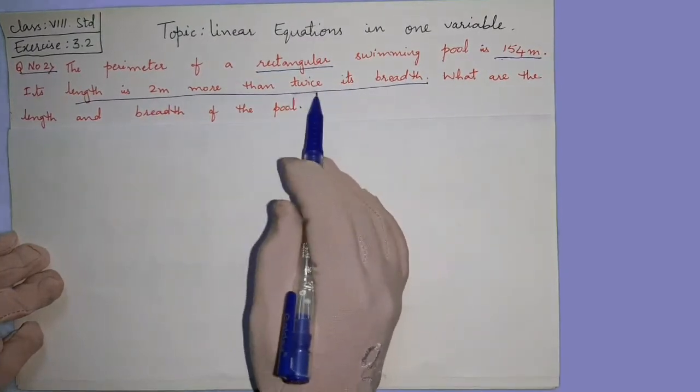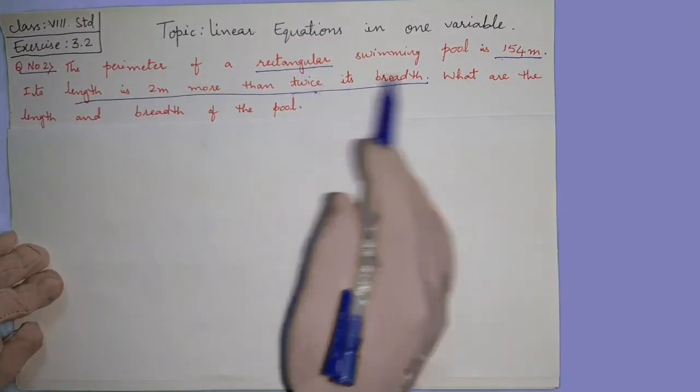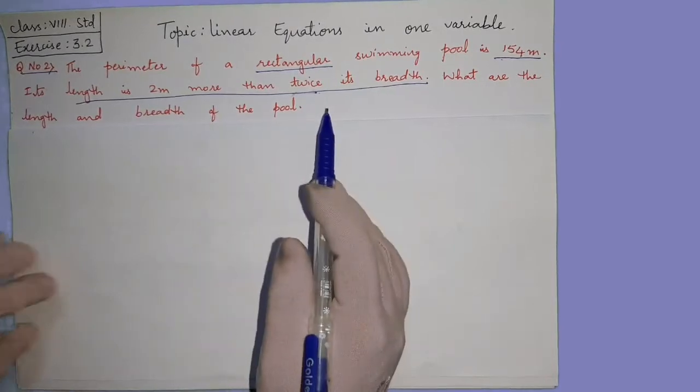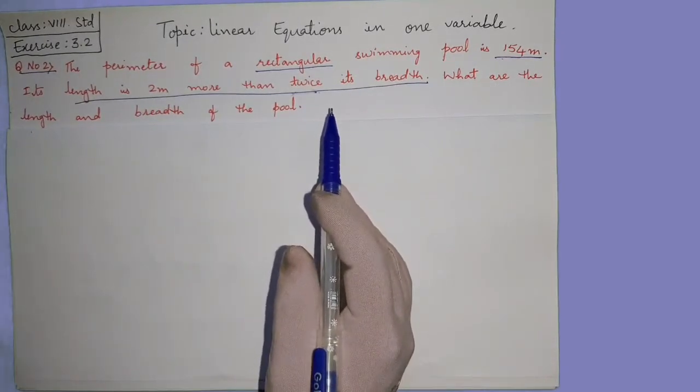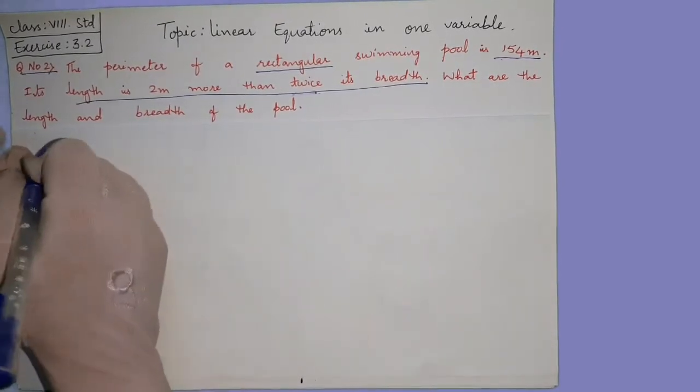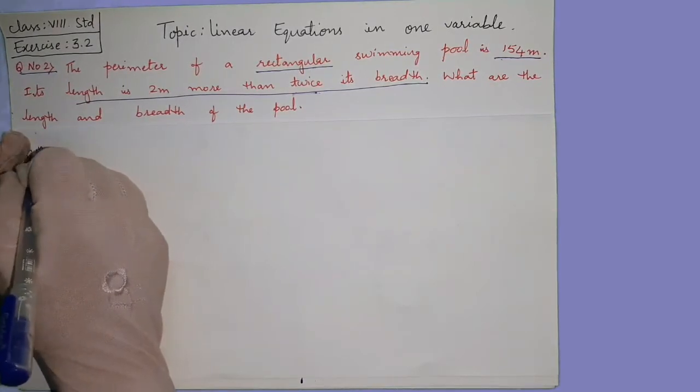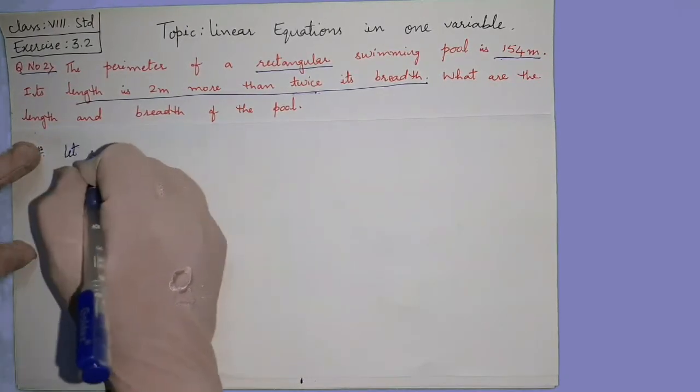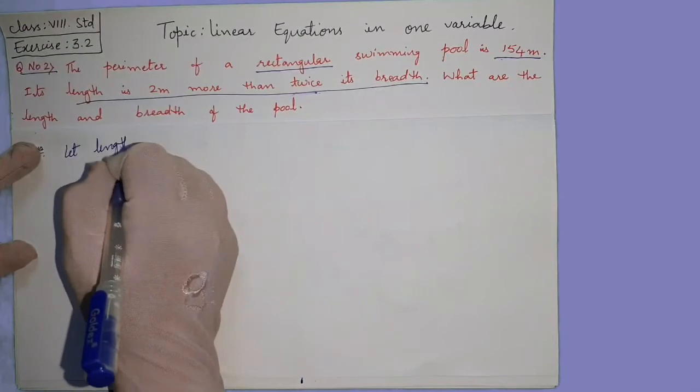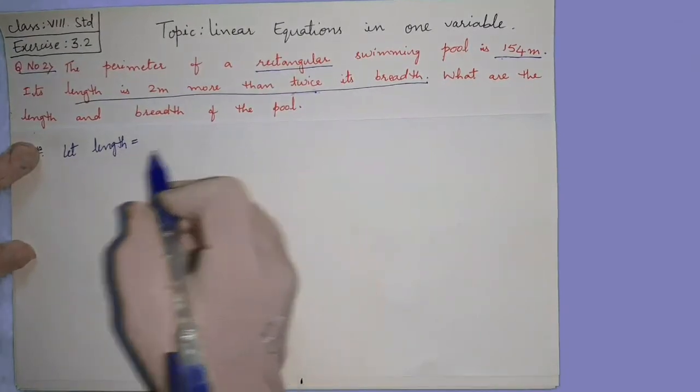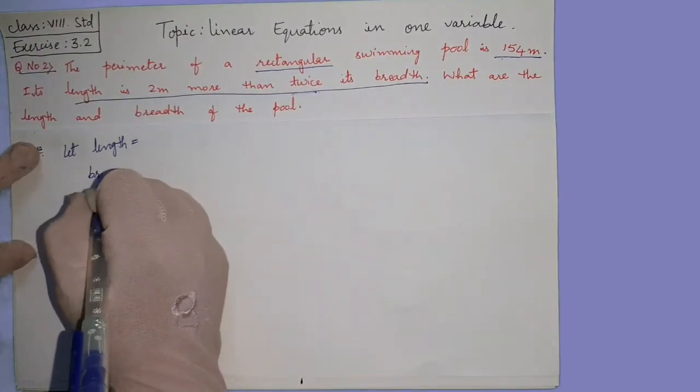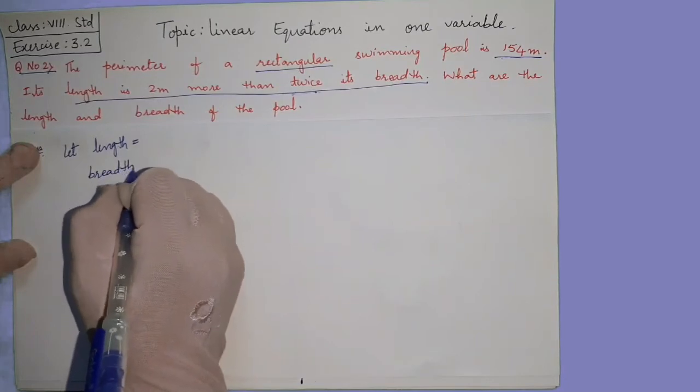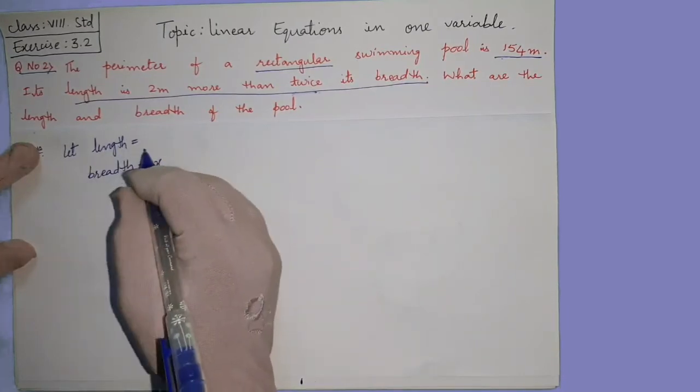Twice means double, 2 in 2 you have to take. What are the length and breadth of the pool? So first of all we will write what is the length and breadth. Length is given in the form of breadth, so we will take breadth as x. So how much is length?